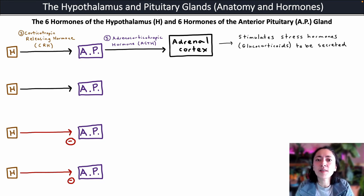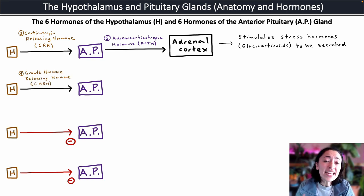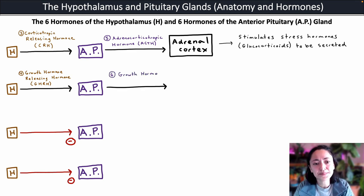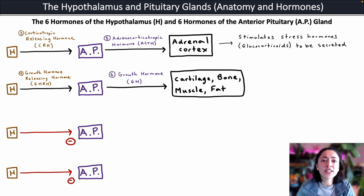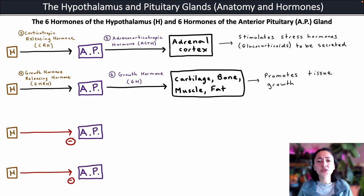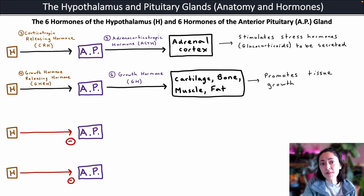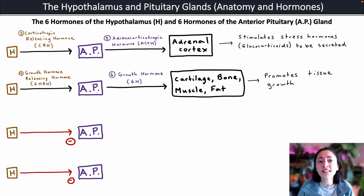The fourth hormone secreted by the hypothalamus is growth hormone releasing hormone, and it triggers the anterior pituitary gland to secrete growth hormone. Growth hormone targets several different tissues — specifically cartilage, bone, muscle, and fat — and promotes tissue growth. We don't only produce growth hormones during development; the secretion of growth hormone is also triggered by exercise, which releases growth hormone to help build muscle and strengthen bones.